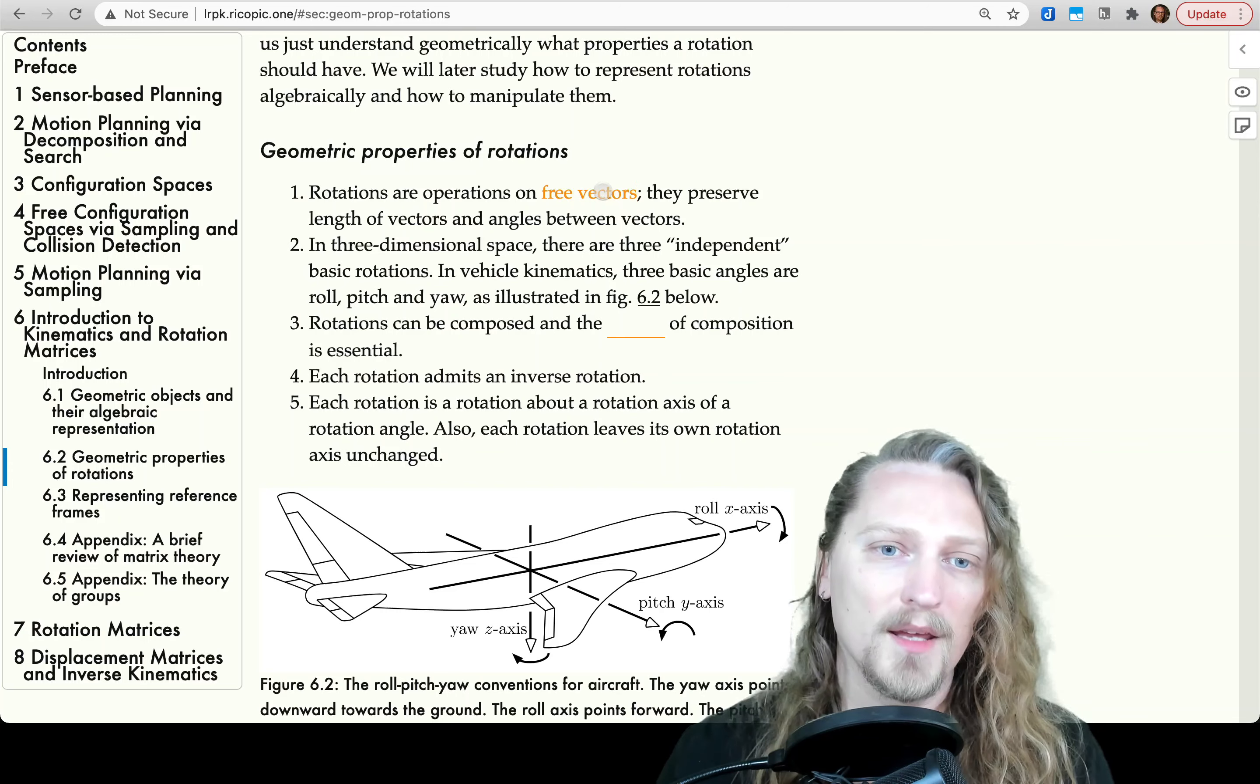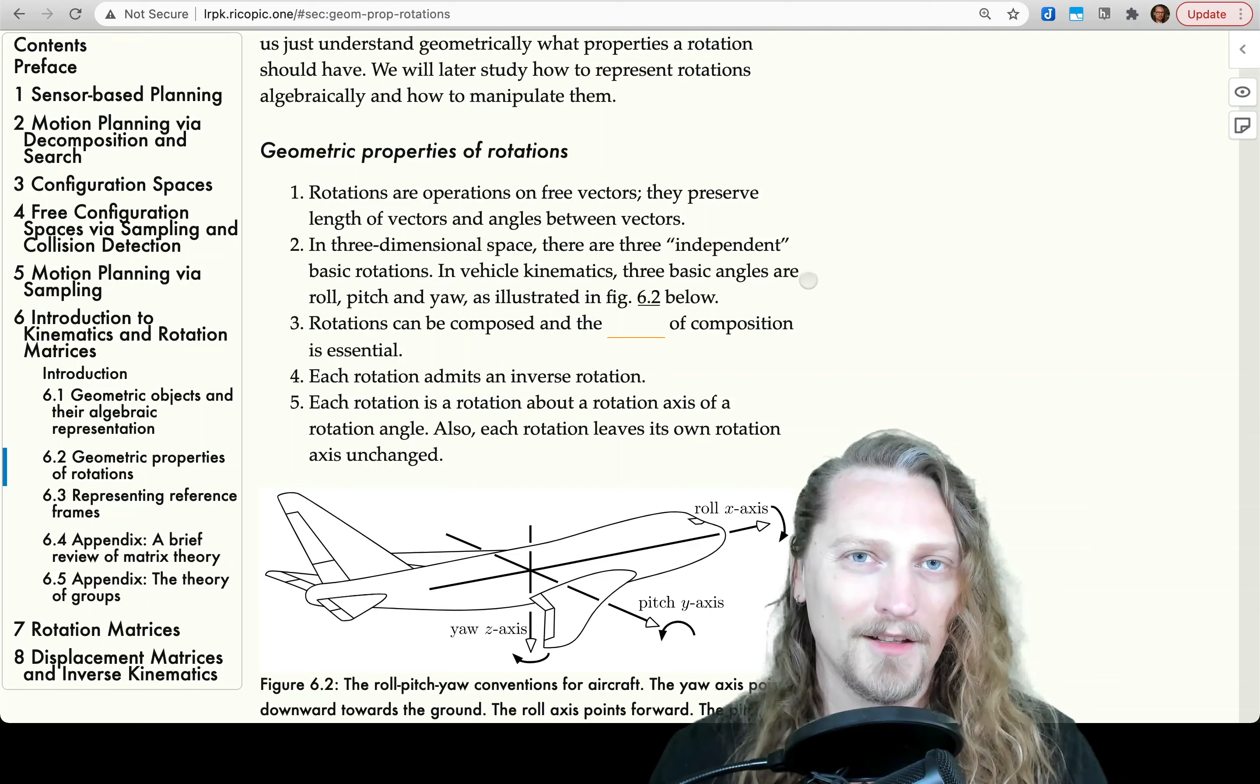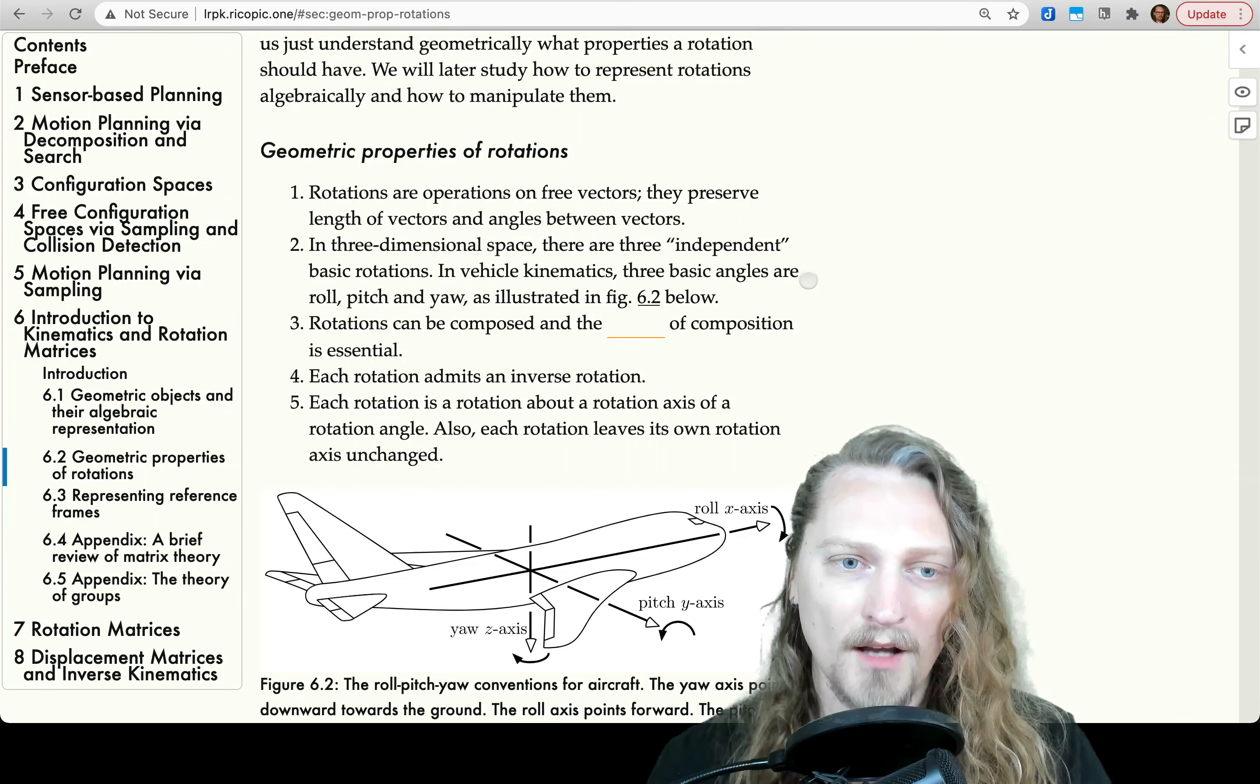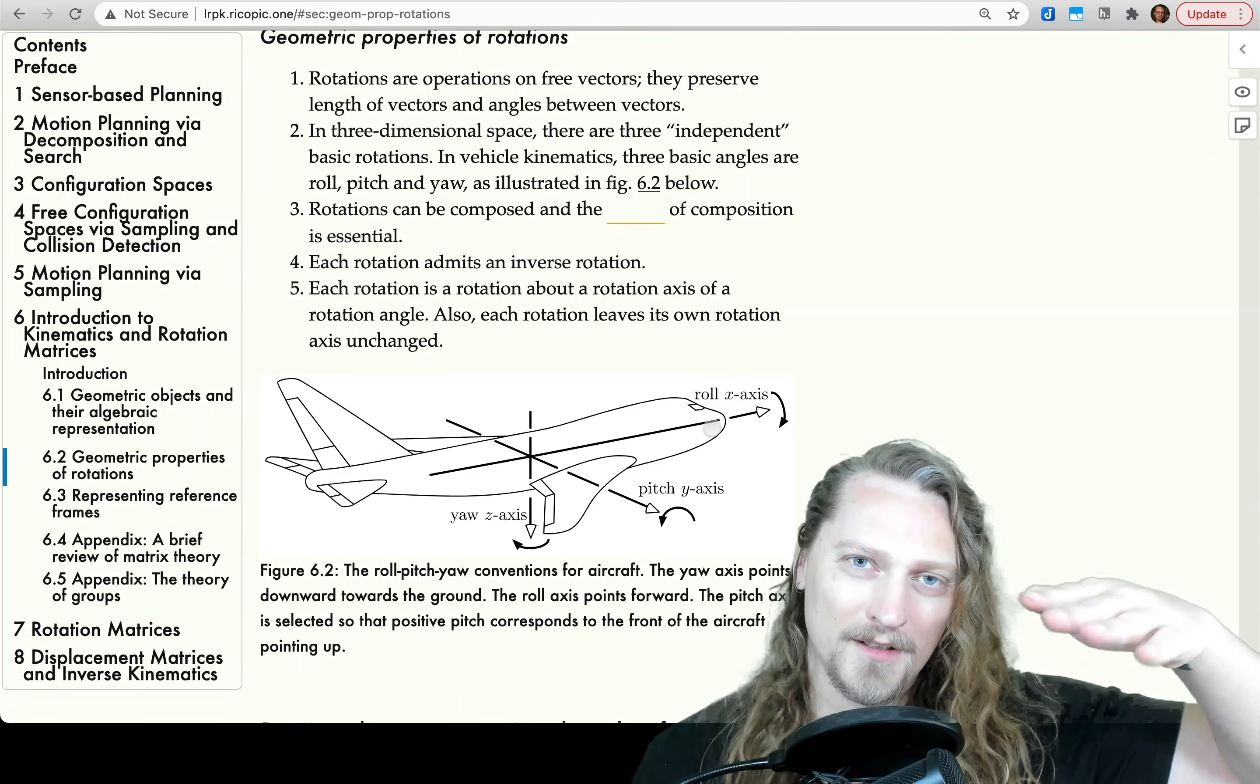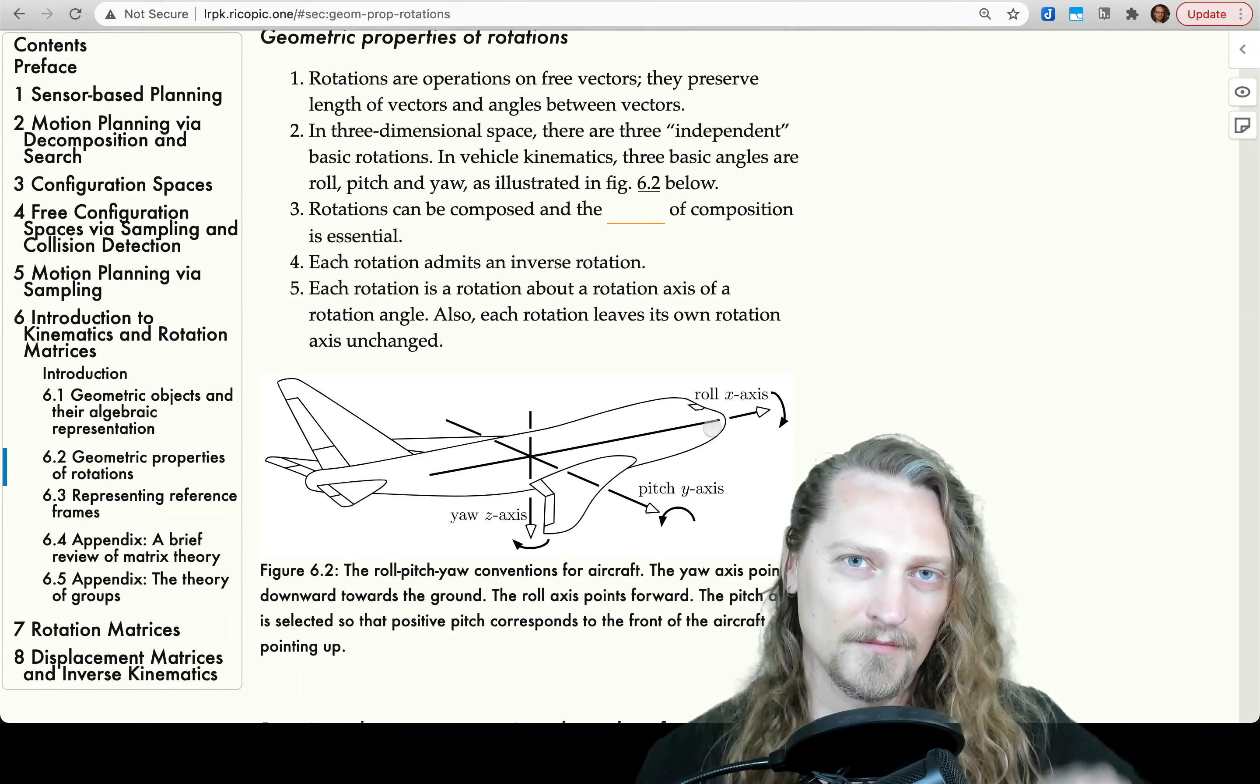In three-dimensional space, there are three independent basic rotations. In vehicle kinematics, three basic angles are roll, pitch, and yaw, as illustrated in figure 6.2 below. So roll, pitch, and then yaw.